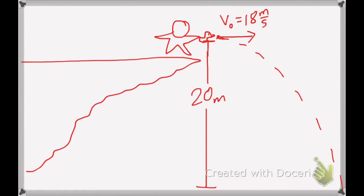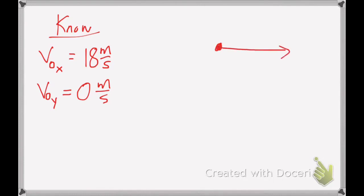Part A of the question asks, how long will it take until it reaches the ground? Well, to answer that, let's set up a list of what we know and a list of what we need. First, I know that my initial velocity in the x horizontal direction is 18 meters per second, and my initial velocity in the y direction is 0 meters per second. The reason I know this is my initial vector doesn't point up or down at all. The problem states he launched it perfectly horizontally.